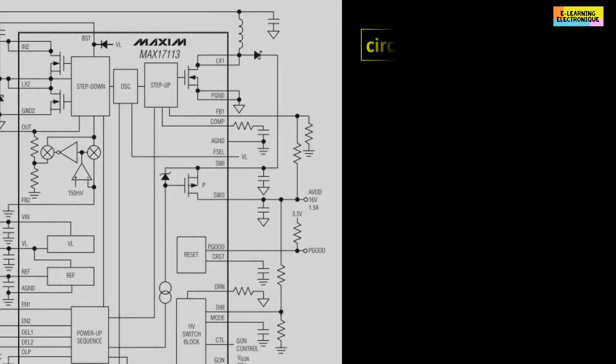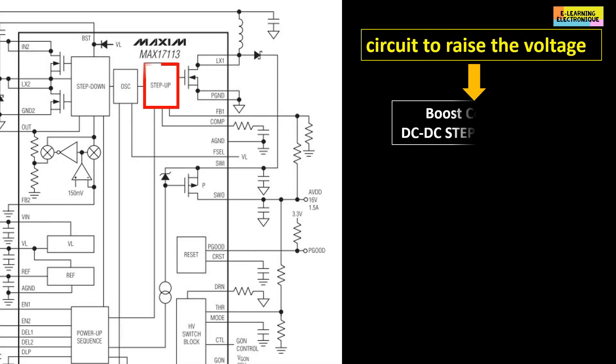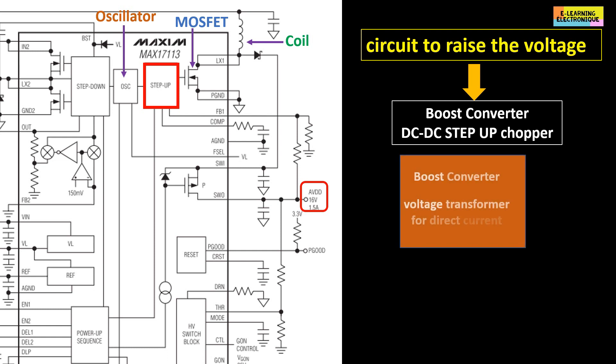The circuit that allows the voltage to be raised is called a boost converter or DC-DC step-up chopper. This circuit is a switching power supply which allows to convert an input voltage into an output voltage of higher value. Here the converter raises the 12 volts to 16 volts. This is the AVDD voltage with a high amperage of 1.5 amps. The boost converter is similar to a voltage transformer, but this circuit is only applicable with direct current. The voltage rise is at the expense of the current.